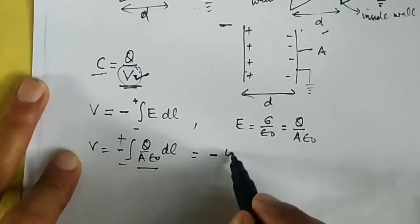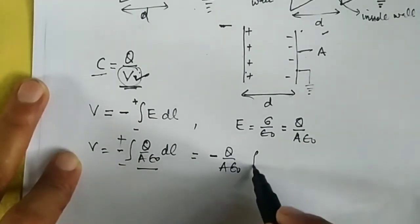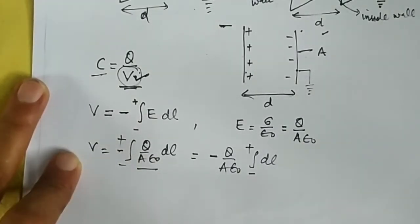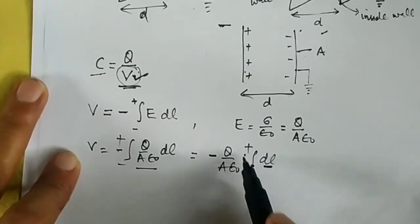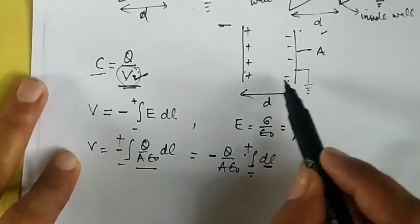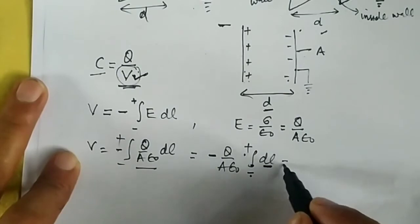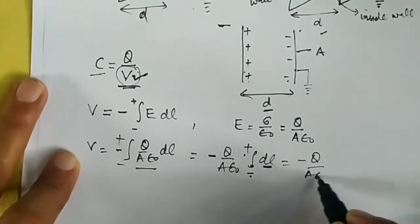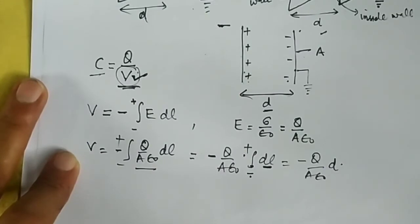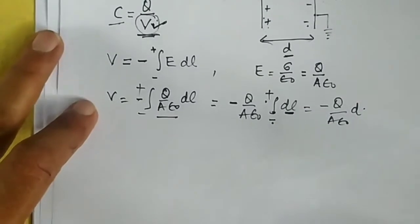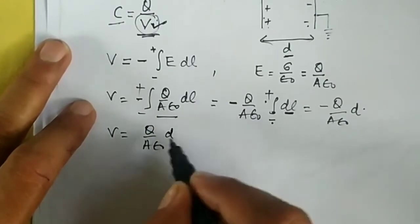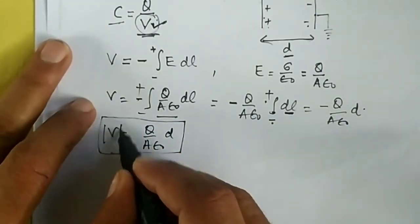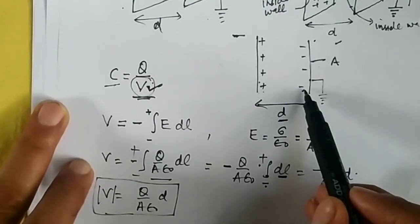Taking the constants outside, we get minus Q over A times epsilon naught, multiplied by the integral of dl from negative plate to positive plate. The total length from negative to positive plate is D. After solving, we get V equals Q times D divided by A times epsilon naught. Writing only the magnitude, the electric potential is Q times D divided by A times epsilon naught.